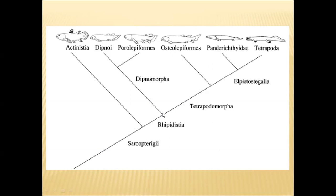Another group is Rhipidistia. Rhipidistia is divided into two groups: Dipnomorpha and Tetrapodomorpha. From Dipnomorpha, the Dipnoi group (lungfishes) and another extinct group, Porolepiformes, originated. They look like present Dipnoi fishes, which is why these two groups are collectively called Dipnomorpha. Out of those two, only the Dipnoi group is living now; Porolepiformes is extinct.